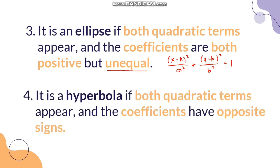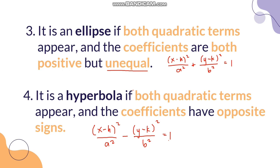For hyperbola, it is a hyperbola if both quadratic terms appear and the coefficients have opposite signs. In the standard form (X−H)²/A² − (Y−K)²/B² = 1, both X and Y are squared but the operation is subtraction, meaning one of them must be negative. So depending on the orientation, either X squared or Y squared is negative, giving opposite signs.